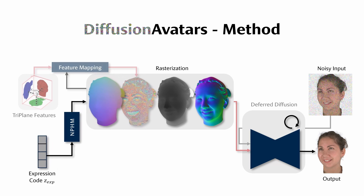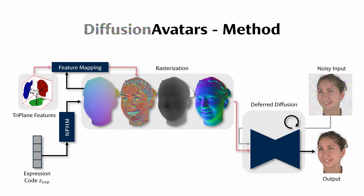Inspired by deferred neural rendering, we rig learnable spatial features to the mesh surface. Note that NPHM models geometry as a signed-distance field and hence does not provide a consistent UV mapping. Instead, we perform triplane lookup with NPHM's canonical coordinates. We call this deferred diffusion.